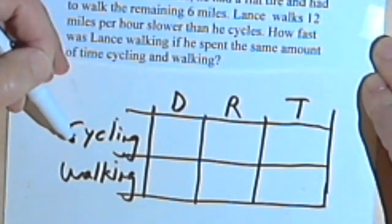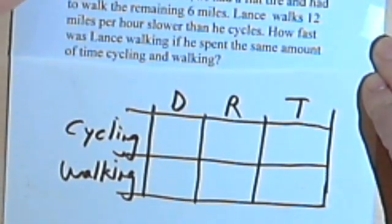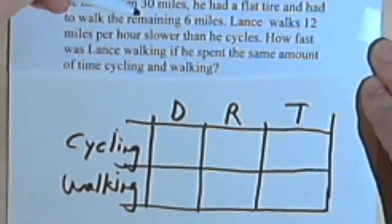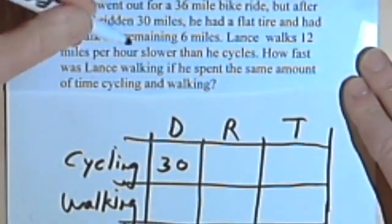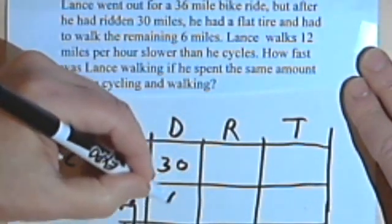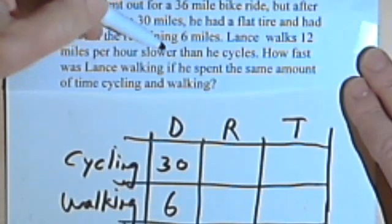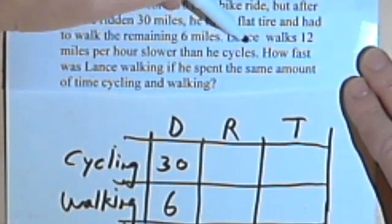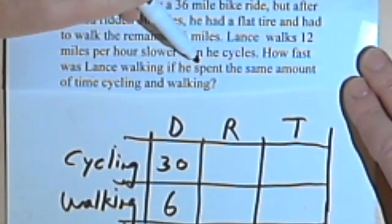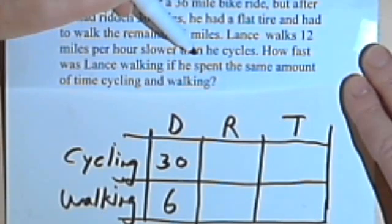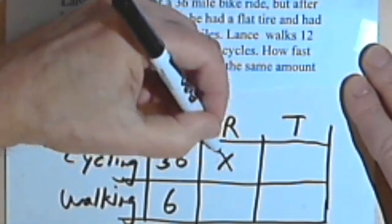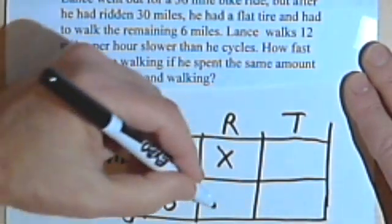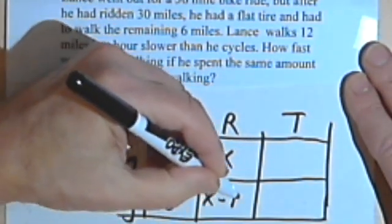So let's see what we can do. Cycling, we know he cycles 30 miles. So his cycling distance is 30, and then he had a flat tire and he had to walk 6 miles. We don't know the rate exactly, but we know that he walks 12 miles per hour slower than he cycles. So if he cycles at x miles an hour, then his walking speed is x minus 12.